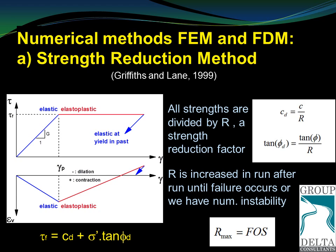These are the strength of the soil — for example, the cohesion — divided by a reduction factor identified as R. R is increased until the program cannot find a solution with an ever-increasing R. Therefore, when the maximum value of R is reached, the slope fails naturally. This maximum value of R is the factor of safety of the slope.